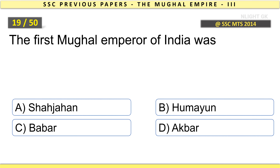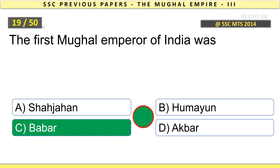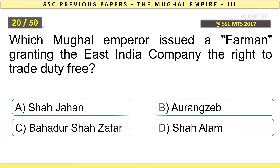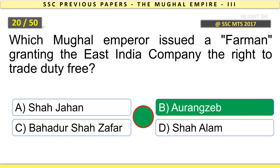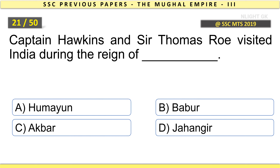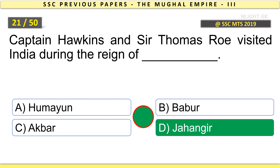The first Mughal Emperor of India was Babur. Which Mughal Emperor issued a firman granting the East India Company the right to trade duty-free? Aurangzeb. Captain Hawkins and Sir Thomas Roe visited India during the reign of Jahangir.